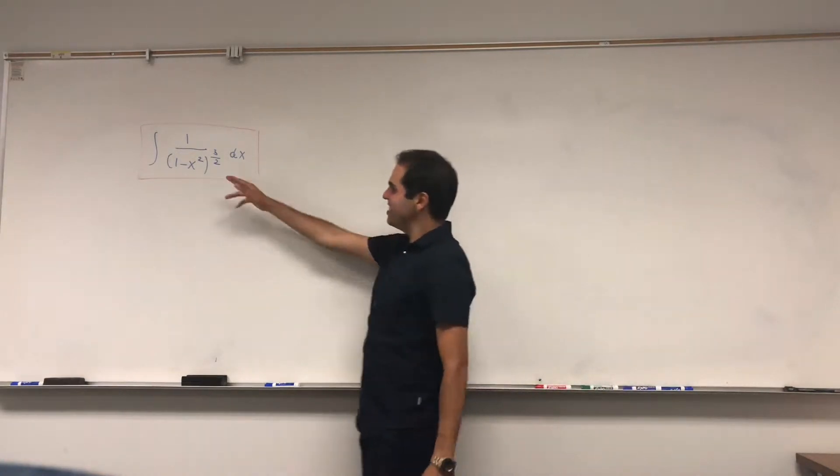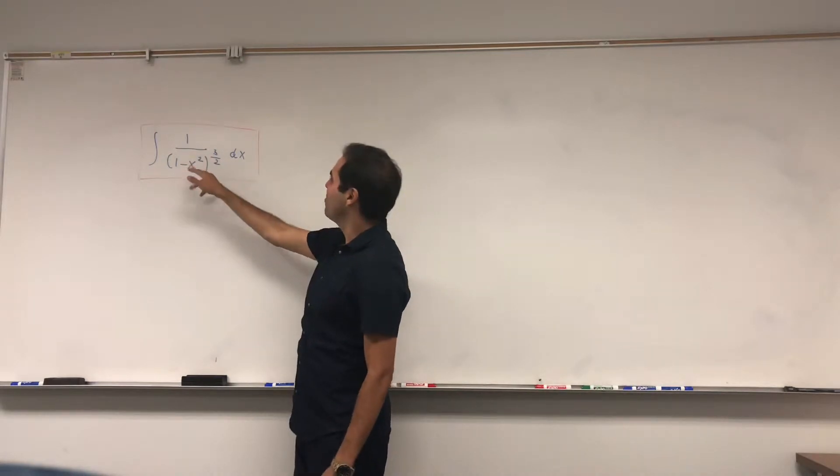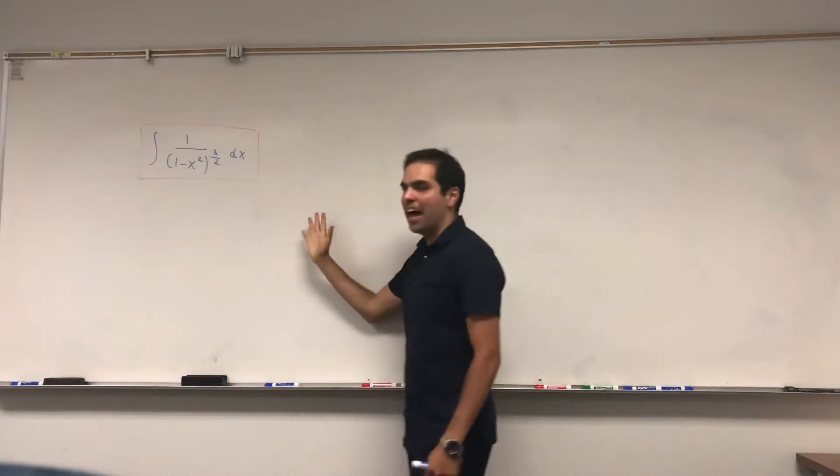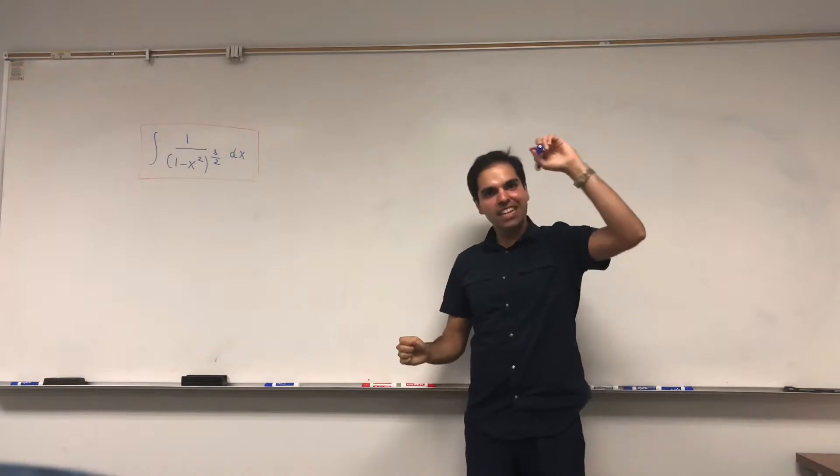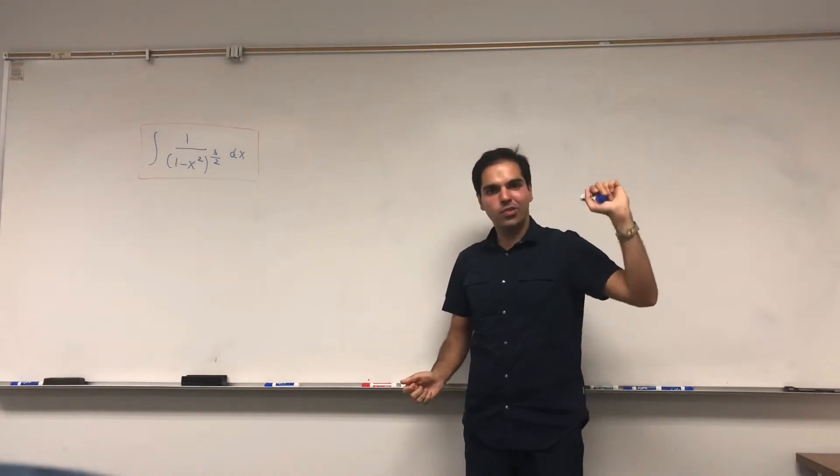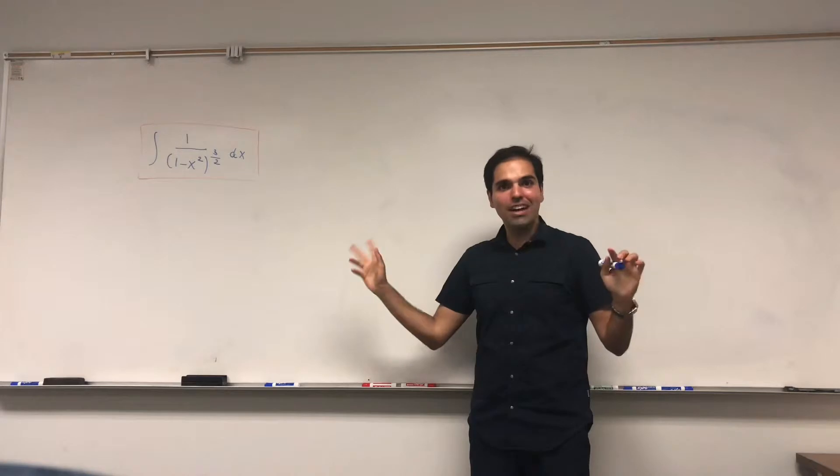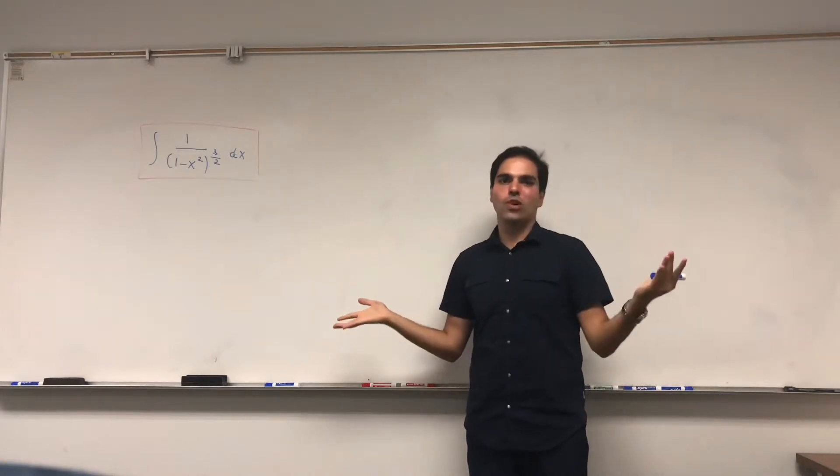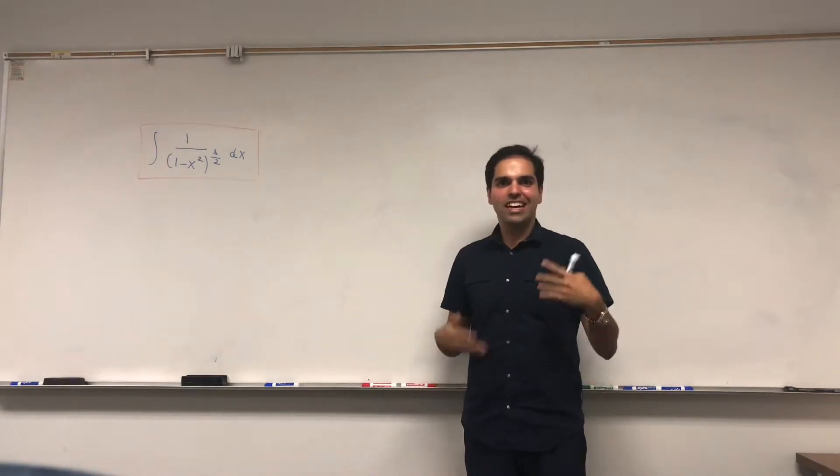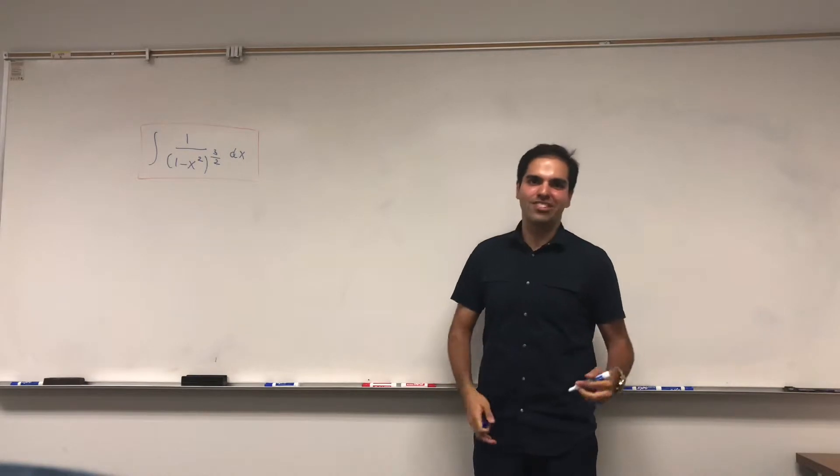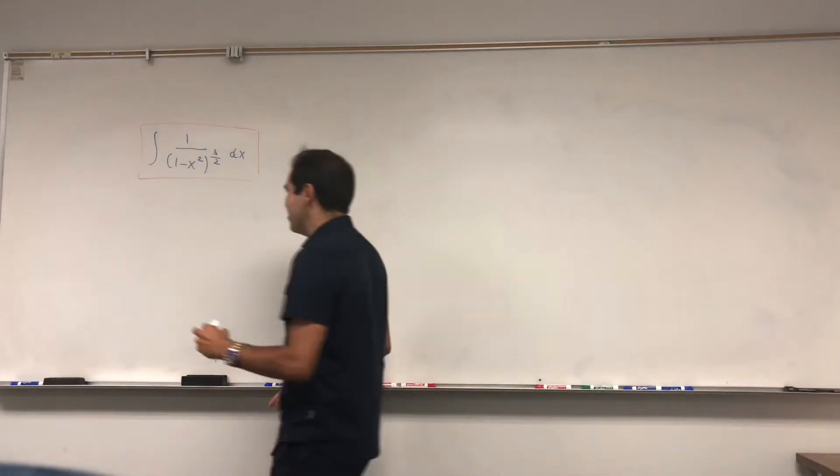Let's see. It's the integral of 1 over (1 minus x squared) to the three halves. Because we have a half power, it's a square root, and whenever you see 1 minus x squared, especially square root of 1 minus x squared, it calls for a trig substitution.